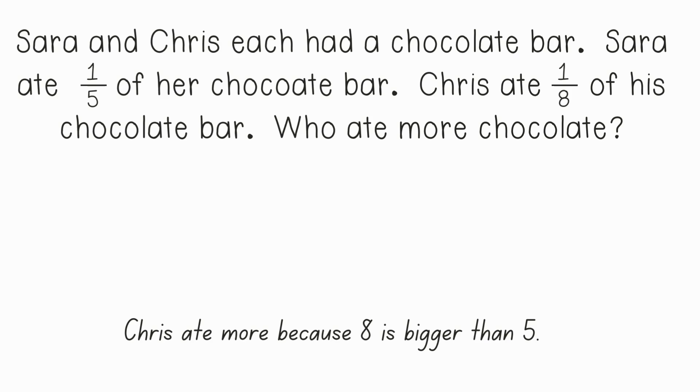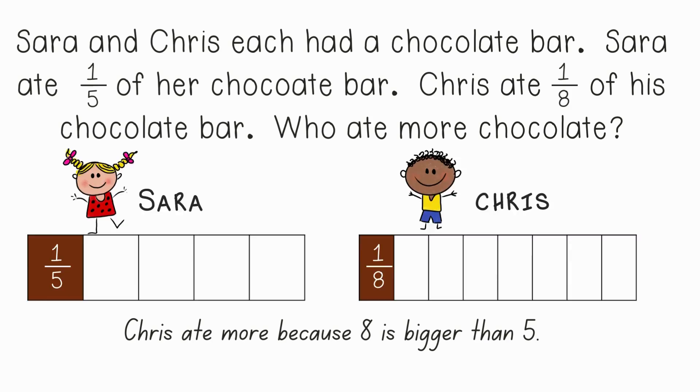Here's how you could have explained it. Eight is bigger than five. But when we're talking about fractions, we have to think about what that number means. If Sarah and Chris each had the same size chocolate bar, Sarah ate one out of five pieces and Chris ate one out of eight pieces. So even though eight is a bigger number, Chris's pieces are smaller. And since Sarah ate one of the bigger pieces, she ate more.